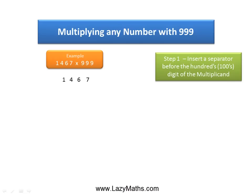The first step is to insert a separator before the 100's place value in 1467. The 100's place value for 1467 is 4, so we insert a separator right before the 4.